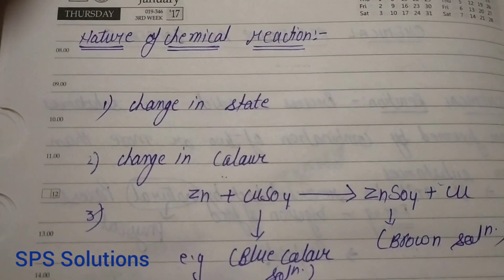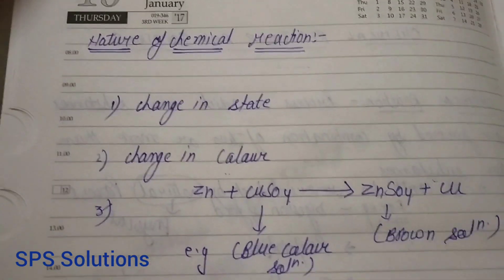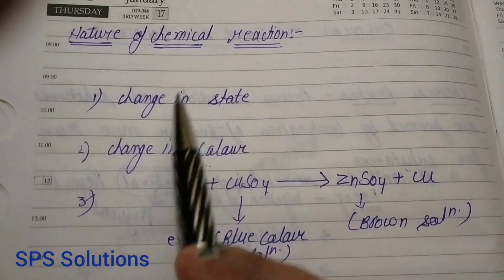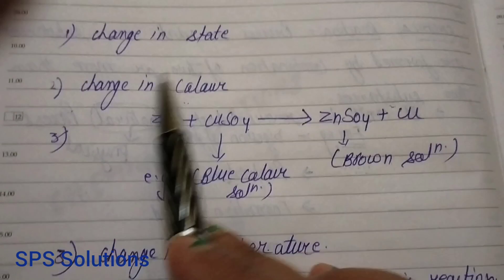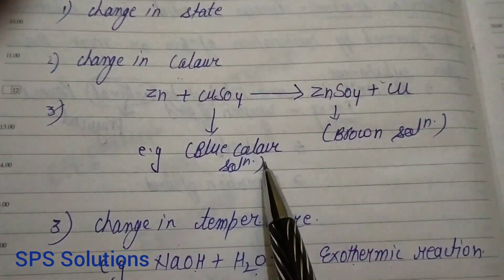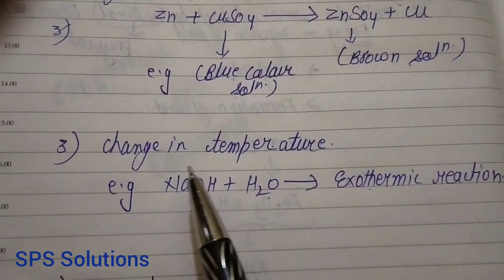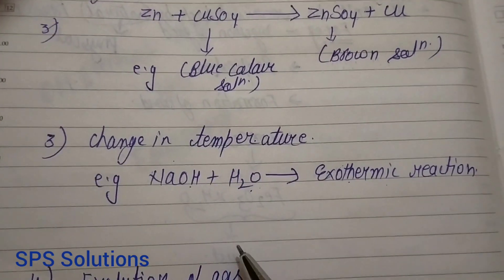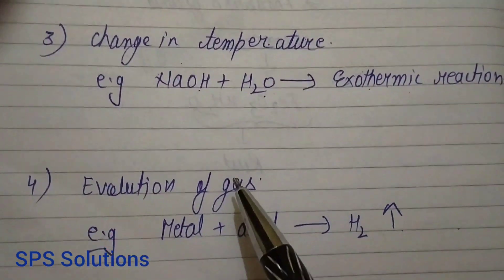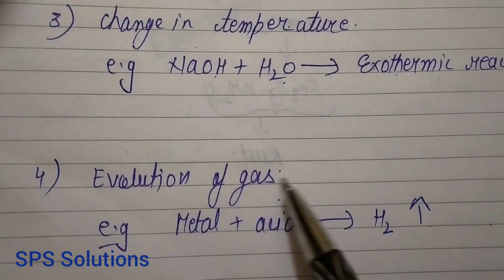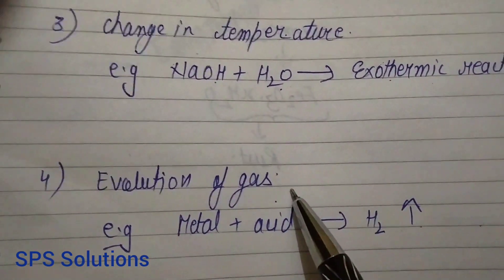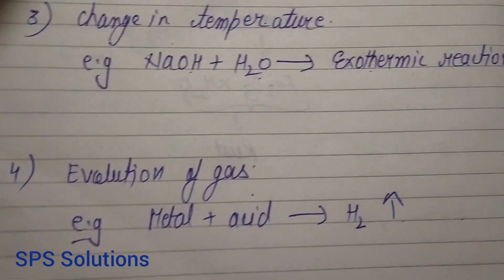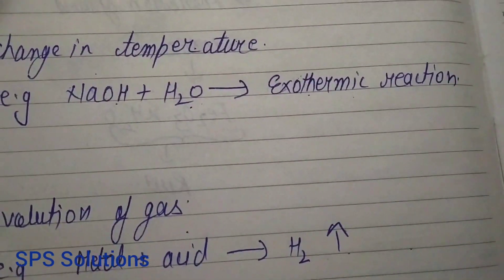So all these are the natures of a chemical reaction. A chemical reaction can take place with these nature changes: change in state, change in color, change in temperature — with the sodium hydroxide example — and evolution of gas, which sometimes takes place. So let's move on to the next topic of the chapter.